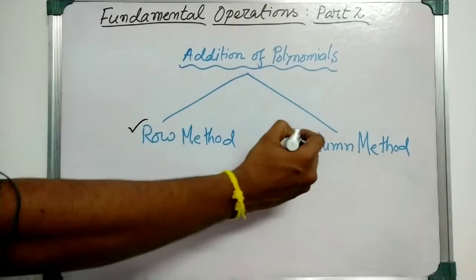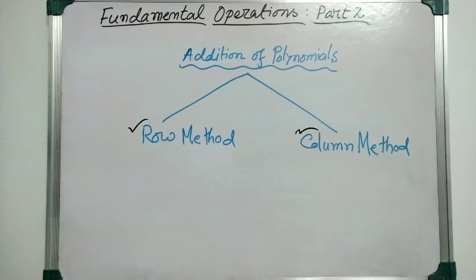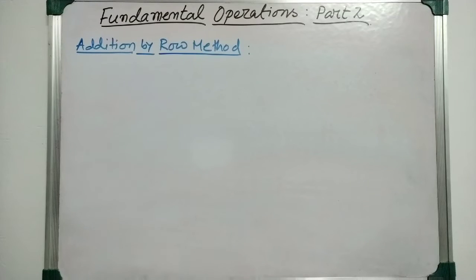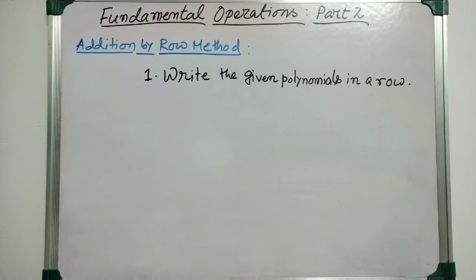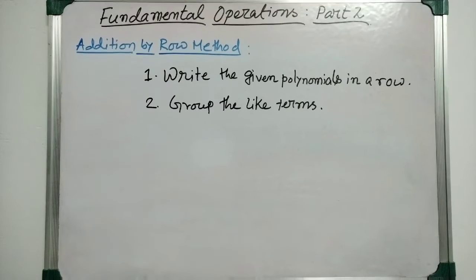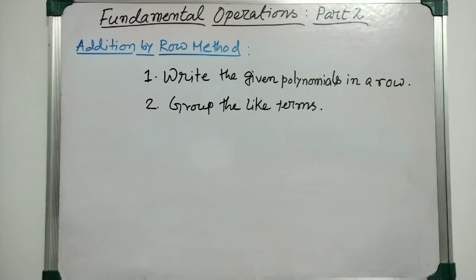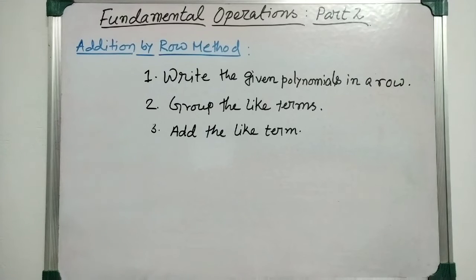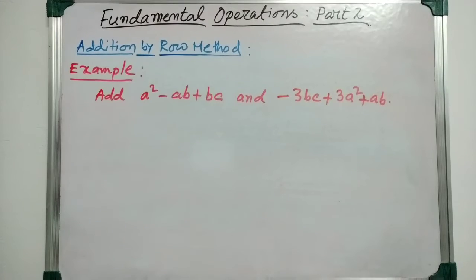For addition by row method, you have to follow three steps. First, write the given polynomials in a row. Second, group the like terms — that is, segregate the like terms by writing them in brackets. Third, add the like terms. You already know how to add like terms from the previous video.